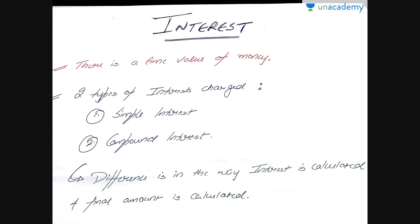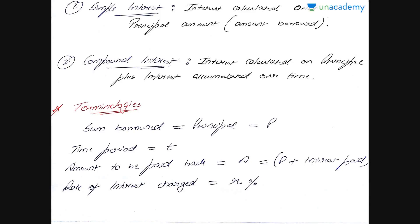There are two types of interest. First is simple interest; second is compound interest. When you take a loan from a bank or borrow money from any third party, they can charge you one of these two types. The key difference is in the way the interest is calculated and the final amount is determined.